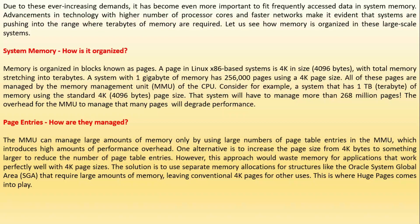System memory is organized in blocks known as pages. A page in a Linux x86-based system is 4K in size — 4096 bytes. With total memory stretching into terabytes, a system with one gigabyte of memory has 256,000 pages using a 4K page size. Consider a system with one terabyte of memory using the standard 4096-byte page size — that system will have to manage more than 268 million pages. The overhead for the MMU to manage that many pages will degrade performance.